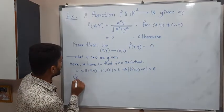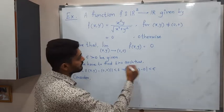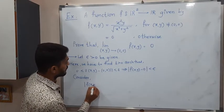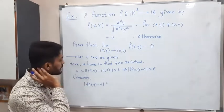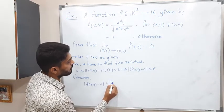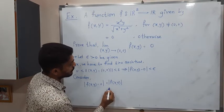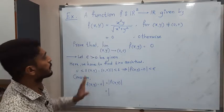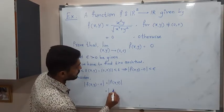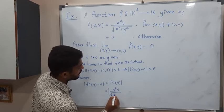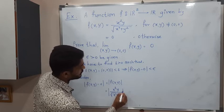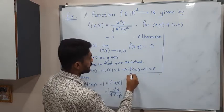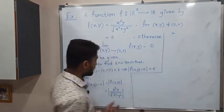We have to find delta which will satisfy this condition. Let us start to work on this — we will solve this part first and then come back. So consider |f(x,y) - 0|. If you subtract zero you have the same, so this is mod f(x,y), which equals the absolute value of x² · y divided by the square root of x² + y².